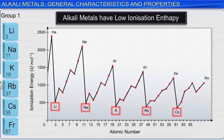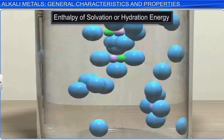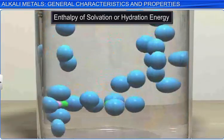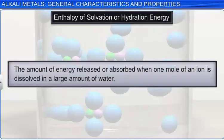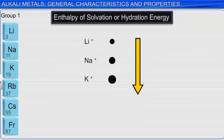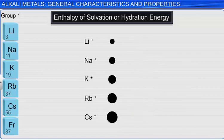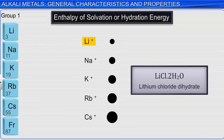Enthalpy of solvation, or hydration energy, is the amount of energy released or absorbed when one mole of an ion is dissolved in a large amount of water. In general, as the ionic radii get larger, hydration energy decreases. And so, the enthalpy of hydration decreases from lithium to cesium. One result is that lithium salts, unlike the salts of the other alkali metals, often form hydrates such as lithium chloride dihydrate.